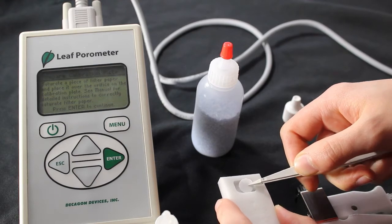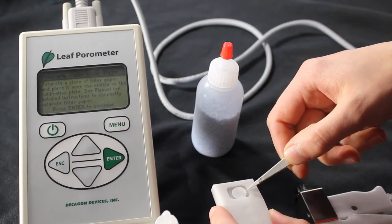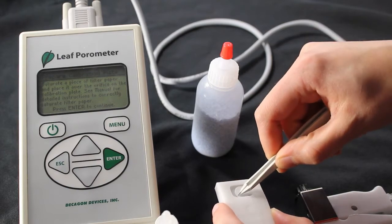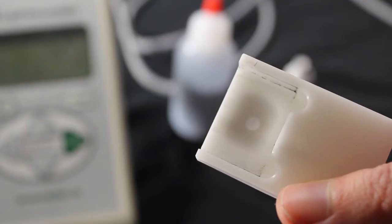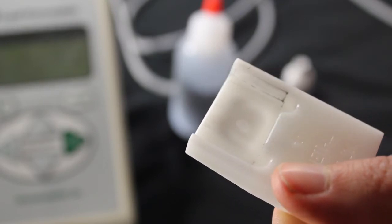After wetting the filter paper, lay it flat over the hole in the calibration plate on the side marked filter paper. Make sure the paper covers the entire hole and lays flat. Turn the calibration plate over and carefully examine the hole to make sure that no meniscus of excess water is present in the hole.